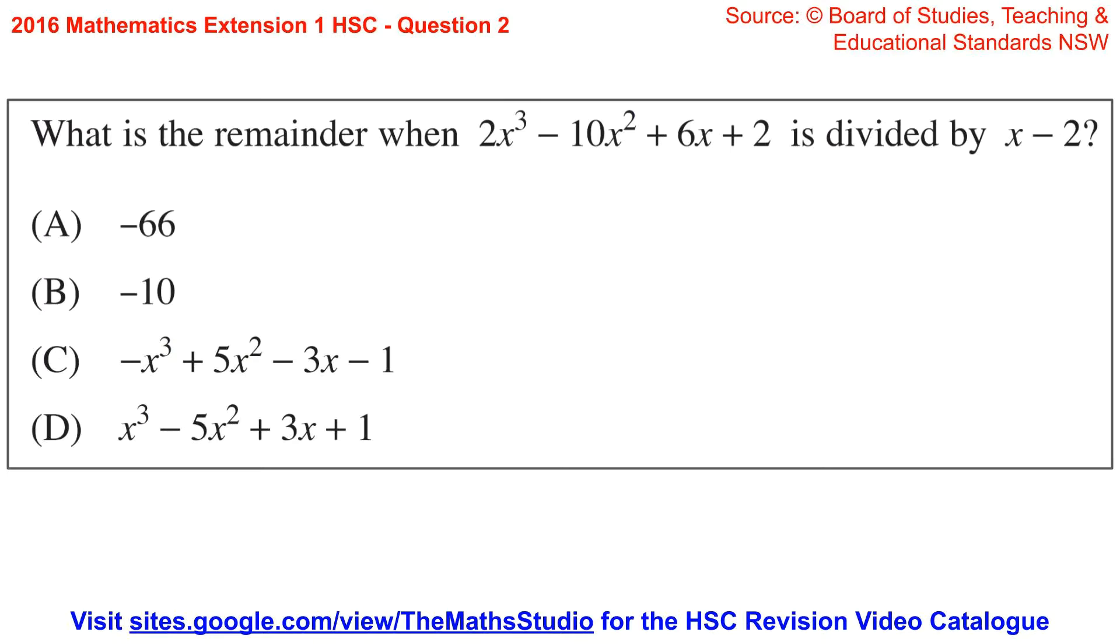Question 2. What is the remainder when 2x cubed minus 10x squared plus 6x plus 2 is divided by x minus 2?